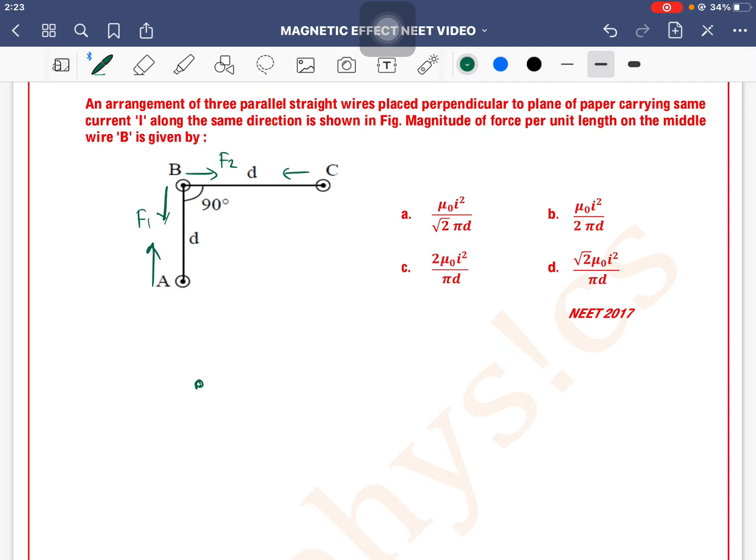So here on wire B, there are two forces, one is F1 and one is F2. How much is the angle? 90 degrees. F1's value, how much is the force per unit length?